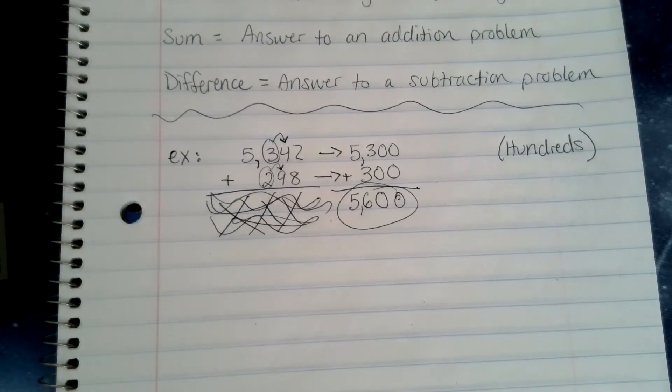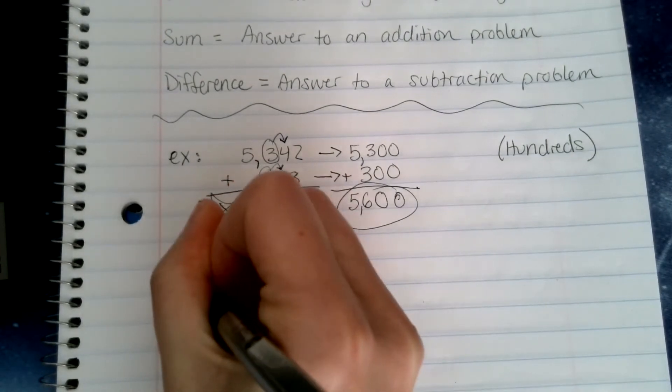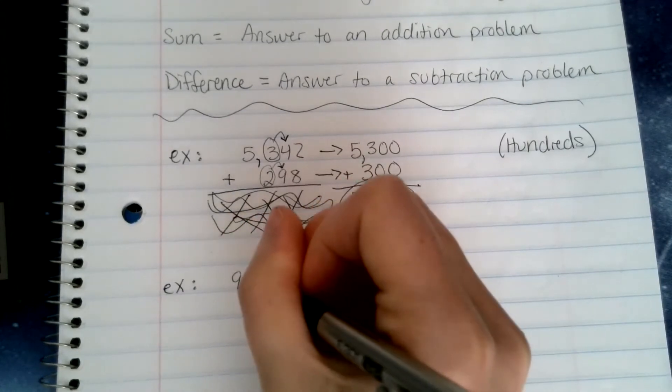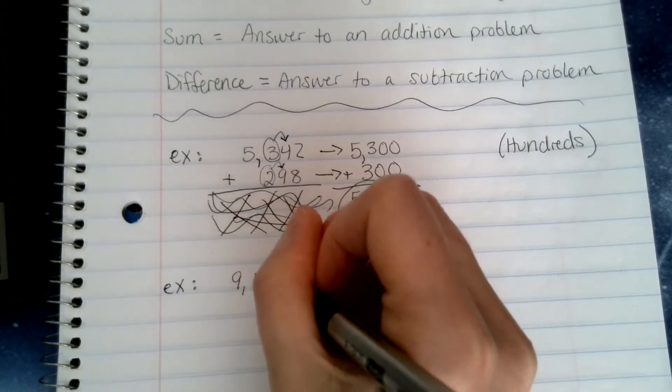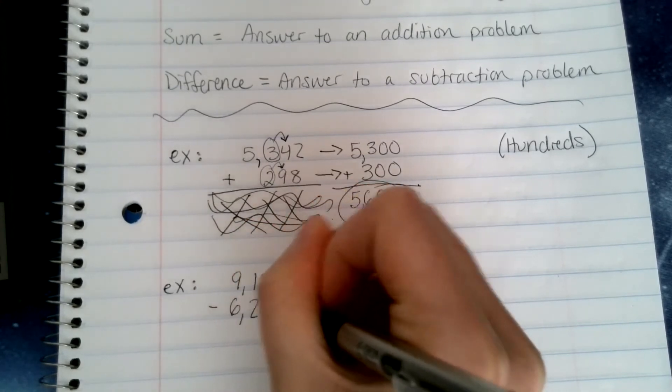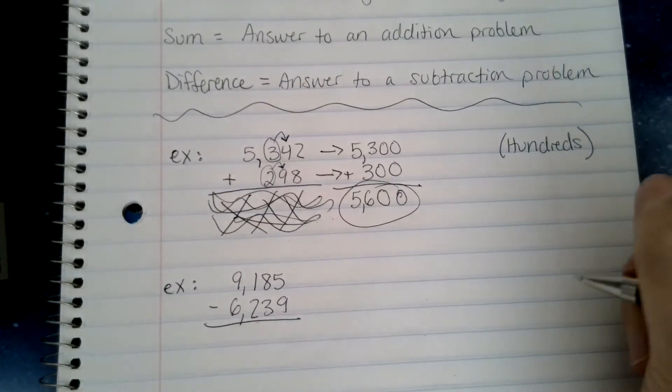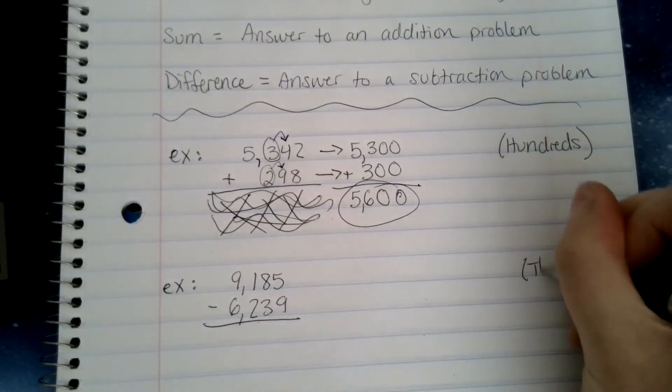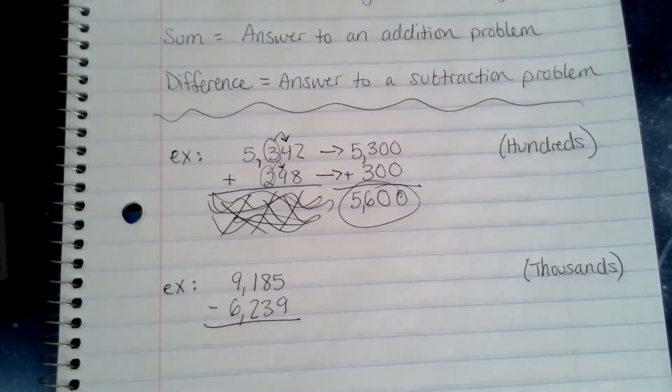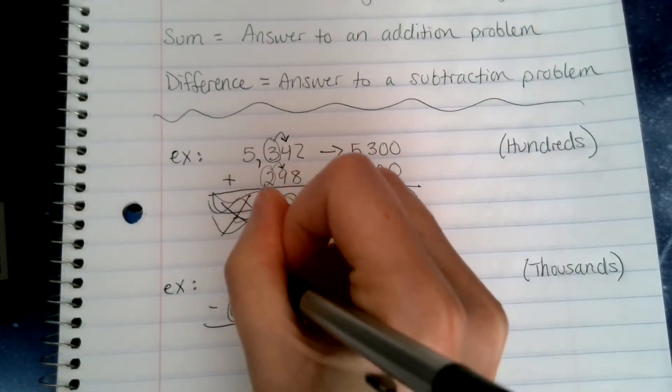So as I go about estimating a sum, this is what it would look like. Let's look at an example of estimating a difference. We're going to do 9,185 minus 6,239. And this one, let's write off to the side, we're going to round to the thousands place when we're estimating.